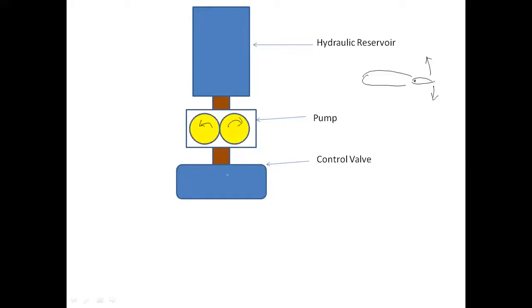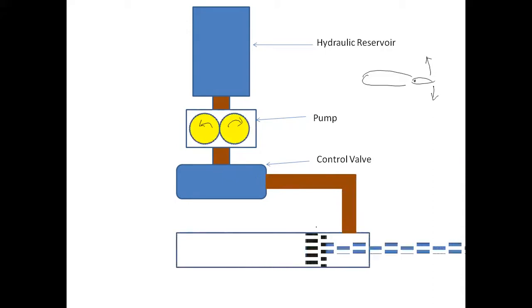So from here, the fluid is coming under pressure. So here, you can see that the fluid is going into an actuating cylinder. This component here is called an actuating cylinder. When the fluid under pressure comes on one side of the actuating cylinder, it pushes the piston to the opposite side like that.